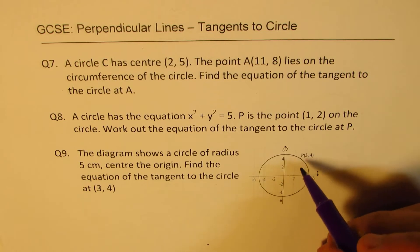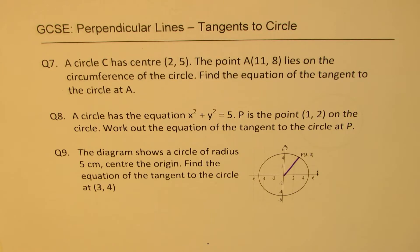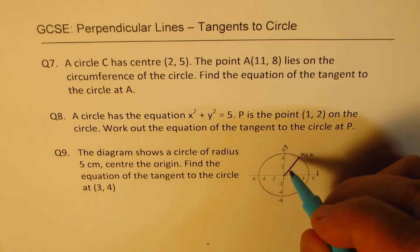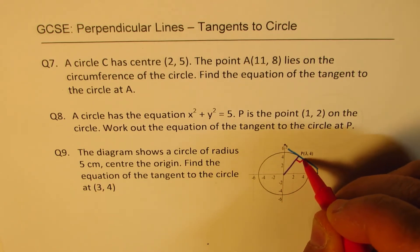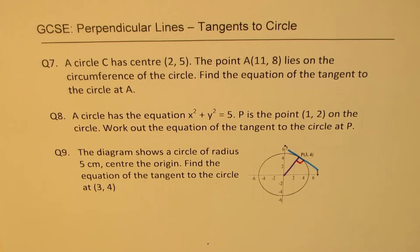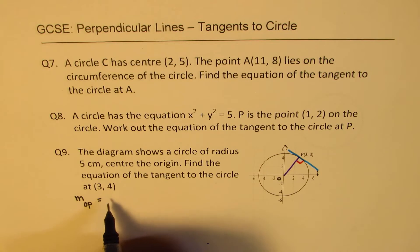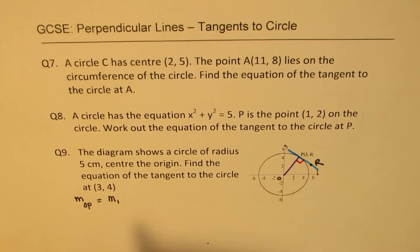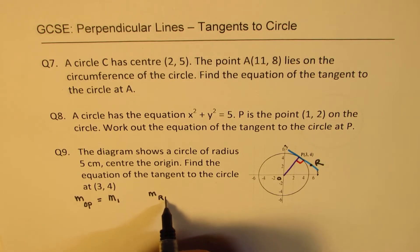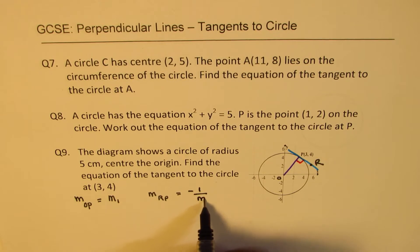The common theme in all three questions is that you are given a point on the circle and you need to find the equation of the tangent at that point. The key concept is that any tangent at a point P on a circle is perpendicular to the radius at that point. So if we connect the center O to point P, the tangent at P is perpendicular to OP.